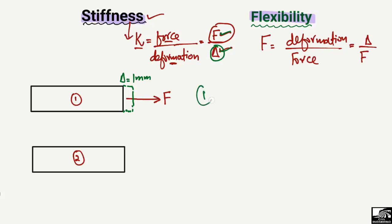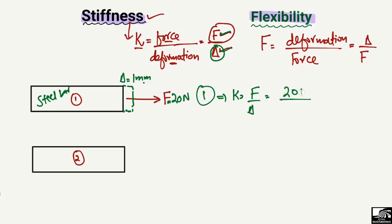For the first material — a steel bar — if I apply 20 Newtons of force and it produces a unit deformation, what will be its stiffness? K equals force divided by unit deformation, so K equals 20 Newton divided by 1 millimeter, giving a stiffness of 20 Newton per millimeter. To produce a unit deformation, we require 20 Newtons of force.